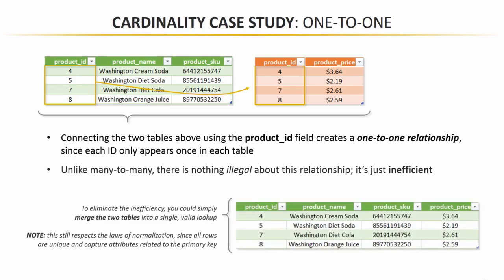To eliminate the inefficiency, what you could do here is simply merge those two tables together into a single valid lookup. I know what you're thinking — I've been telling you this whole time never to do merging, it's inefficient, use relationships instead. But in this scenario it's legit, because we're still respecting the laws of normalization. All of our rows are unique, and this merged blended table still captures attributes related to the primary key, so it still serves one single purpose.